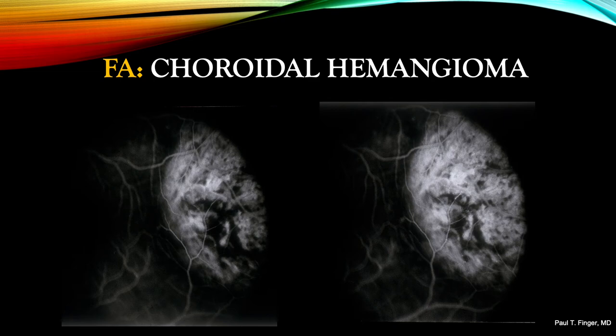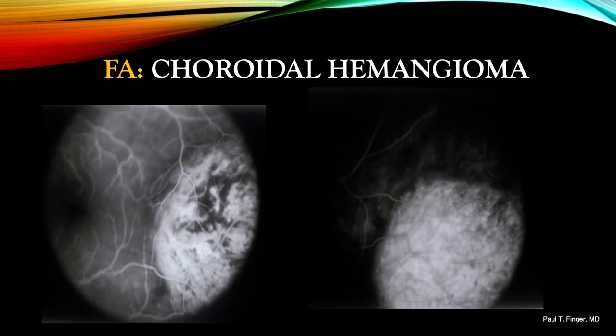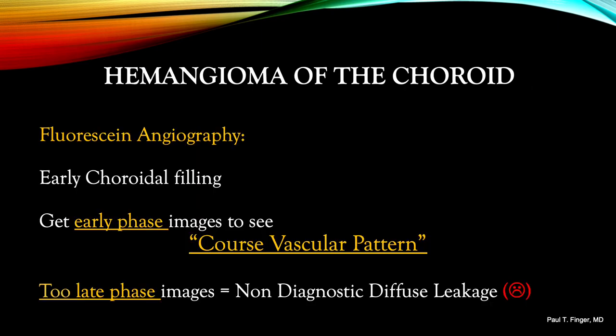This underscores the need to image the earlier phases of the study, where the coarse vascular pattern is visible. As time goes by, the pathognomonic coarse vascular pattern disappears, leading to a relatively nonspecific diffuse hyperfluorescence. Choroidal hemangiomas contain formed blood vessels that easily perfuse, leading to early choroidal filling. So get early phase imaging or an angiographic movie that starts soon after or prior to intravenous injection of the fluorescein dye. Then look for the pathognomonic coarse vascular pattern. Late phase images will merely show non-diagnostic diffuse leakage.